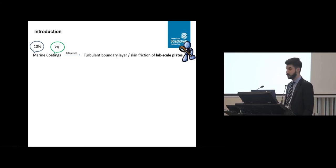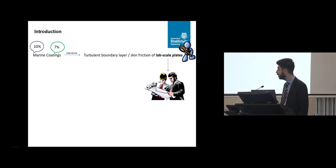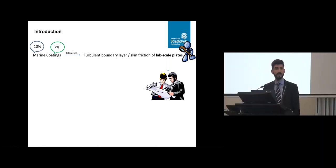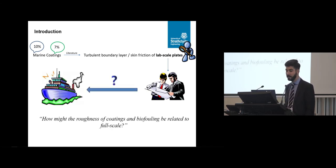So what I found is turbulent boundary layer or skin friction of lab-scale plates. So these are very important information for a hydrodynamicist. And without this data, I cannot do anything. However, this information alone is not enough for these two guys, the engineer who is in the shipyard or design office and the ship owner. They don't understand anything looking at this literature. So there is a gap here. So the gap is how might the roughness of coatings and biofouling be related to full scale. So there are not much tools and there is not a clear path to find this.